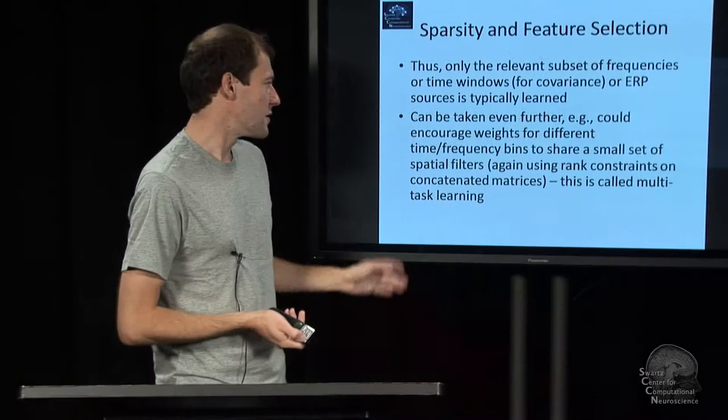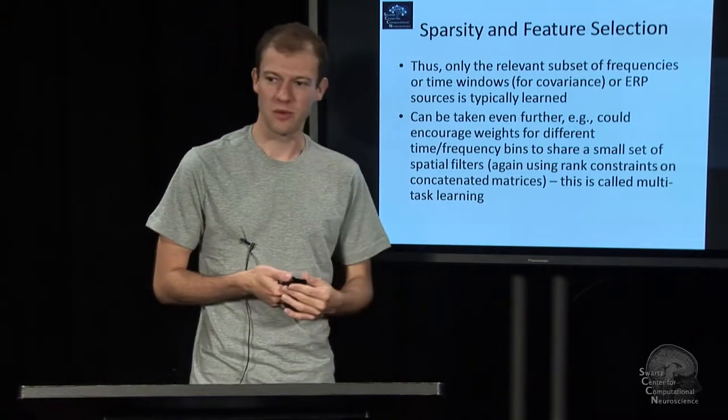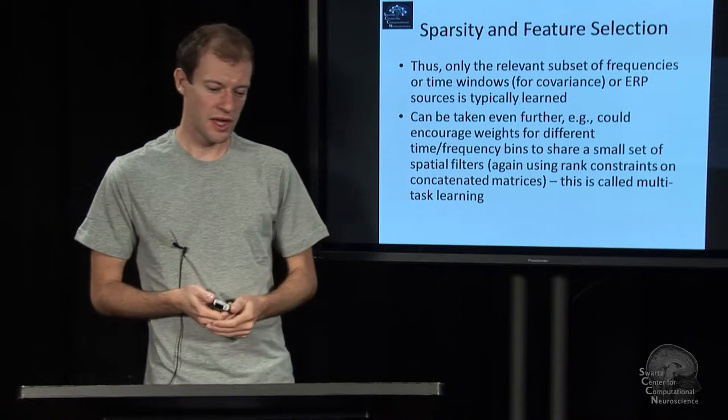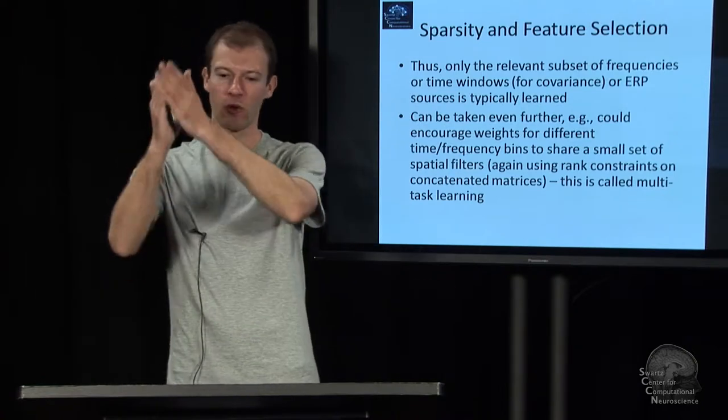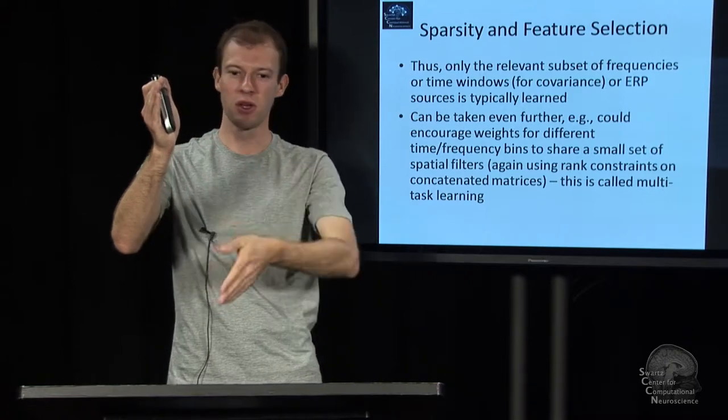But just to give you an idea, you could say, simple example, you have multiple subjects and you're learning a weight matrix. And for one subject you learn one vector, and for another subject you learn another vector, weight vector, and so on. You do this in a whole matrix, say 10 subjects.